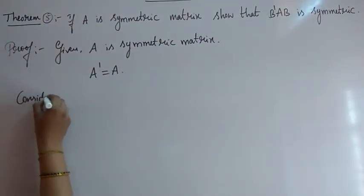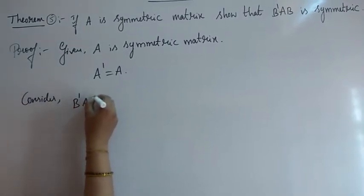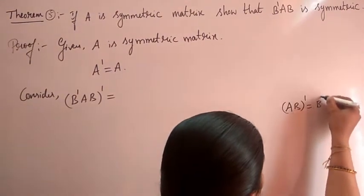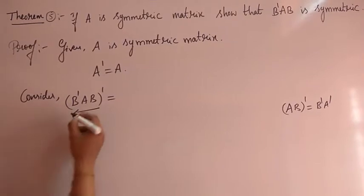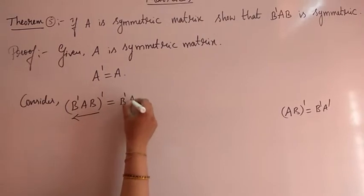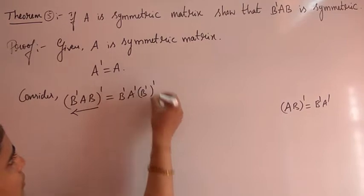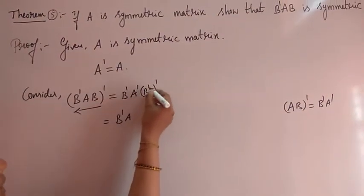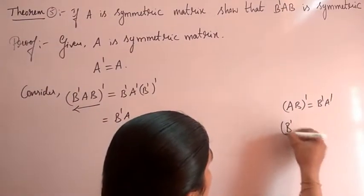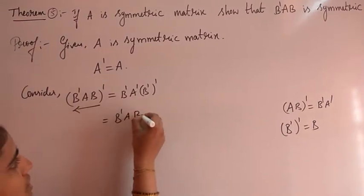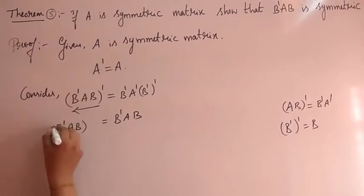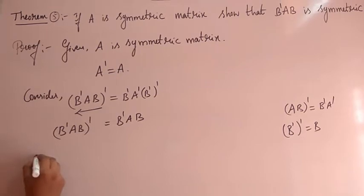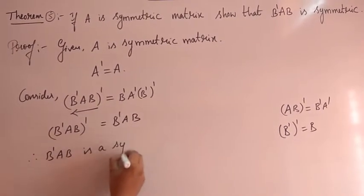Consider the transpose of B'AB. By applying the property that (AB)' = B'A', we get (B'AB)' = B' A' (B')'. Now A' equals A since A is symmetric, and (B')' equals B. So we get B'AB itself — the transpose equals the original matrix, therefore B'AB is a symmetric matrix.